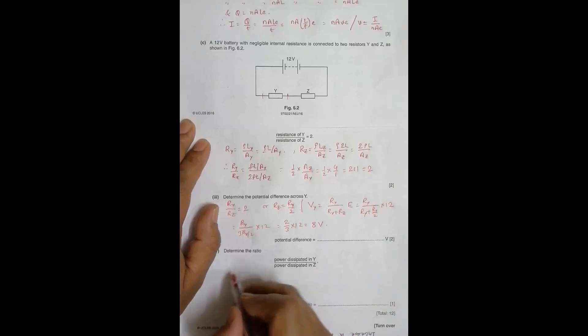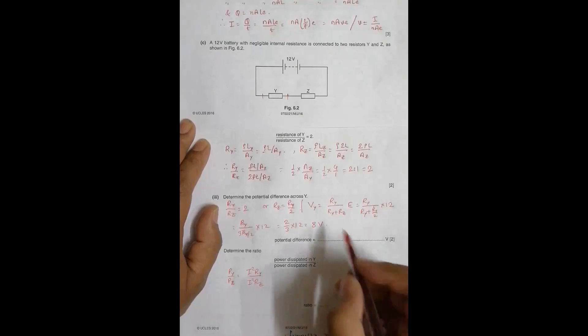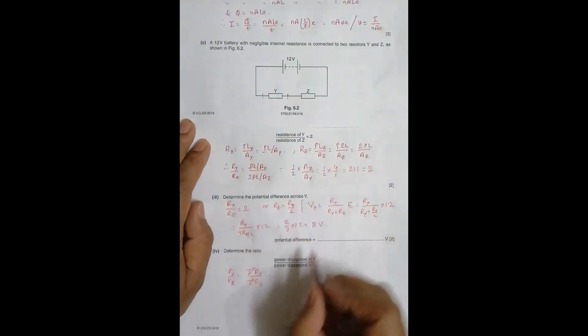Now, again another question that remains is power dissipation in Y and Z. So power Y by power Z should be equal to I squared R_Y by I squared R_Z. So since the current through both these resistors is same, I will be using the formula I squared R. But I am not using V squared by R because I still don't know what the value of V is there in full. So I know V here but I don't know V here. So simply I can do this. So this cancel and this R by R is equal to 2 by 1. So the ratio is equal to 2 is to 1. So this gives the complete answer to this whole question.